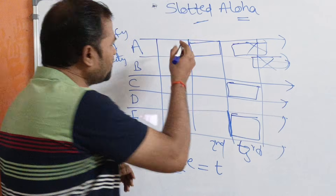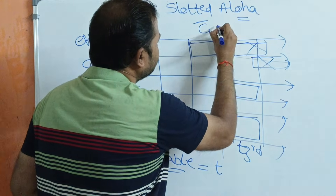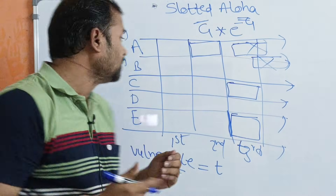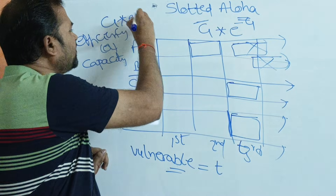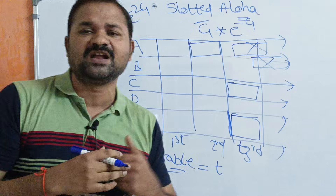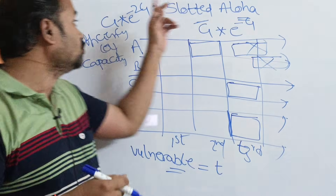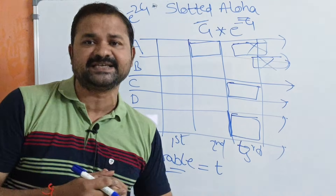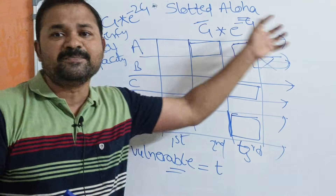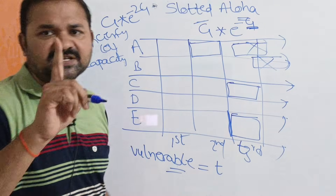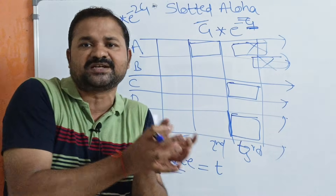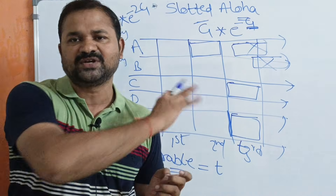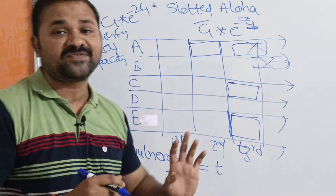The efficiency formula for slotted ALOHA is G × e^(−G), whereas for pure ALOHA the formula is G × e^(−2G). In pure ALOHA the vulnerable time is 2T, giving the factor of 2G, but in slotted ALOHA the vulnerable time is T only, so a single G is sufficient. Maximum efficiency occurs when G = 1, because one slot is enough for transmission.